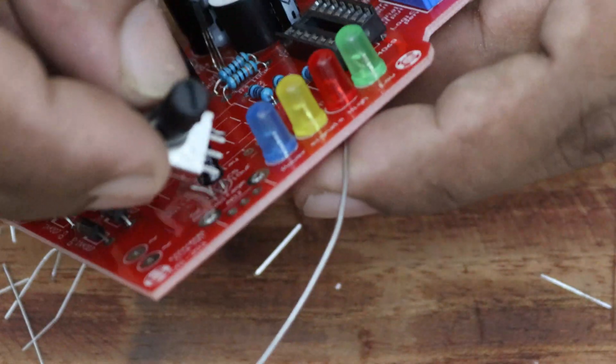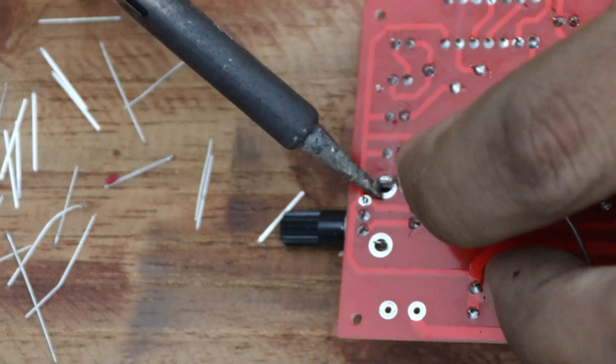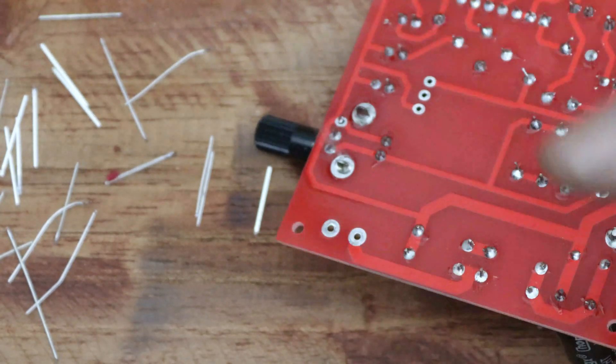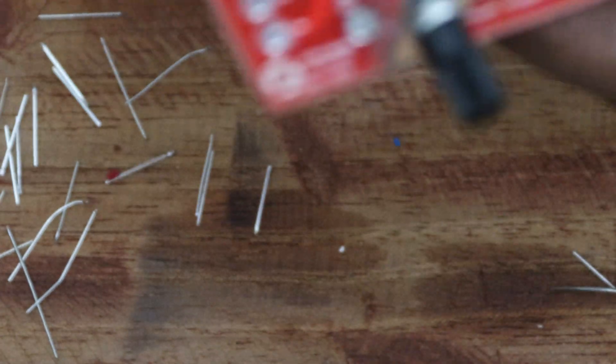There is a potentiometer to control the voltage. Solder it to the PCB. You can change the voltage using that potentiometer.